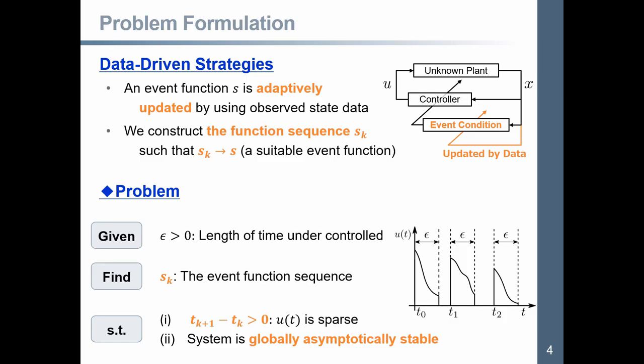Then, we adopt this data-driven strategy. First, an event function s is adaptively updated by using observed state data, like this. And second, we construct the function sk such that sk converges to s, that is a suitable event function.